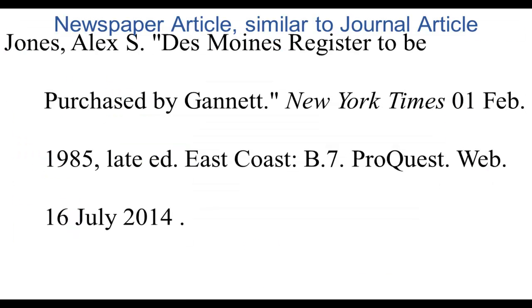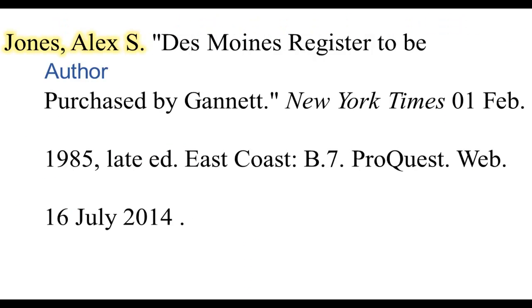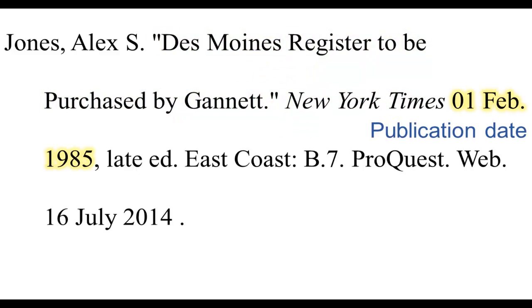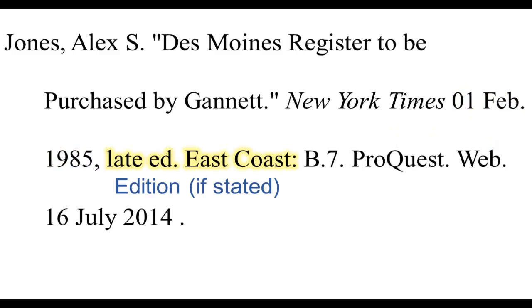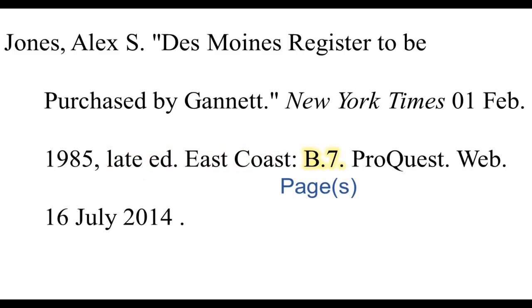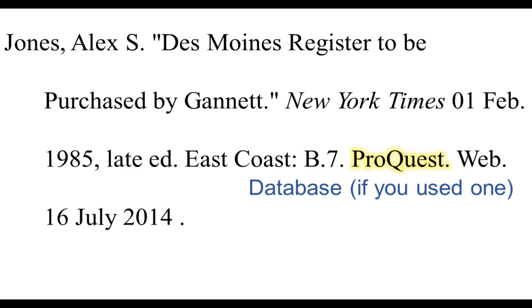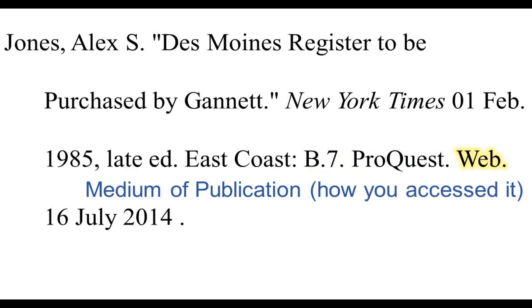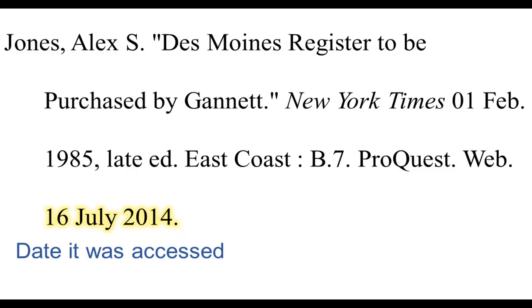You may need to cite newspaper articles, which are similar to journal articles but slightly different. As with journal articles, you begin with the author and article titles. You then list the newspaper title in italics, followed by the publication date — this time it is the exact date, month, and year — followed by the edition if it's listed. After the edition is a colon and then the pages. Newspaper pages look different than journal pages. The rest is similar to journal articles, where you list the database, medium of publication, and access date.